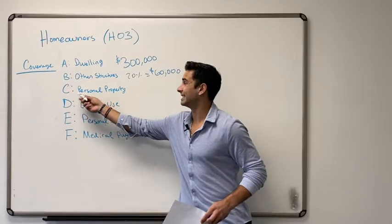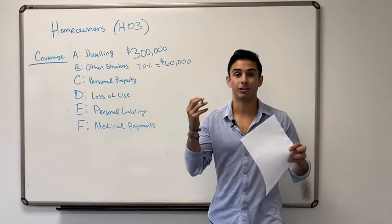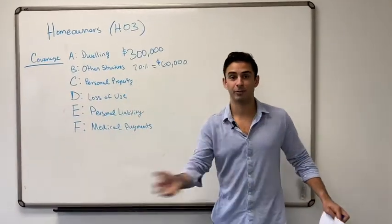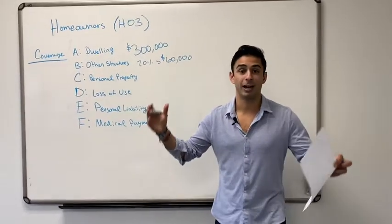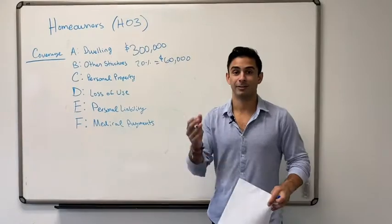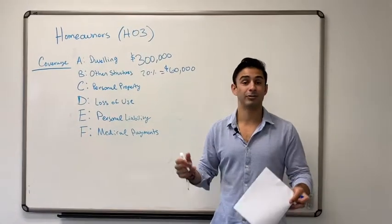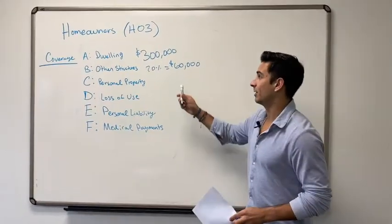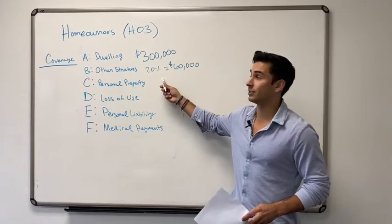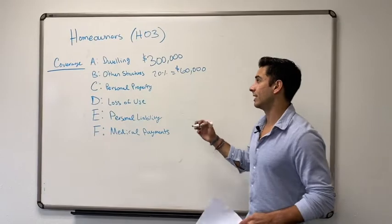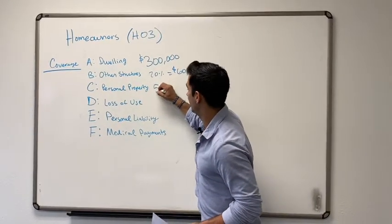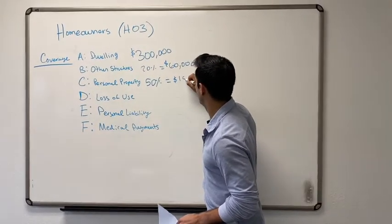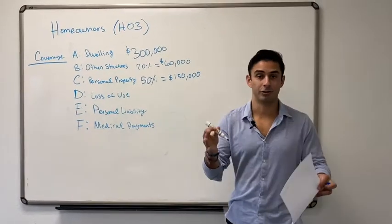Number three, coverage C, personal property. This is for your stuff in very simple terms. So you're a homeowner, you have furniture, you have TVs, computers, phones, clothes, China, like a nice dining room China and your kitchen plates, all those kind of loose items. You don't realize it, but stuff in your garage might add up to hundreds of thousands of dollars sometimes. So a lot of times we see this also being a function, a percentage of your dwelling limit. So let's just say 50%. Sometimes they're higher. So that would be $150,000 in personal property. So that's going to cover all your stuff.